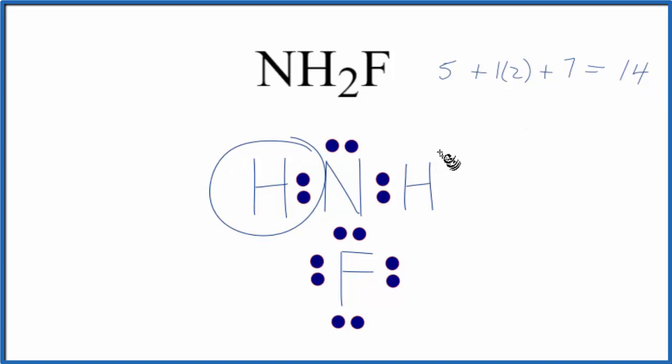You'll notice that the hydrogens both have two, so that's good. Nitrogen has an octet and the fluorine has an octet. So this is the correct Lewis structure for NH2F and this is Dr. B, thanks for watching.